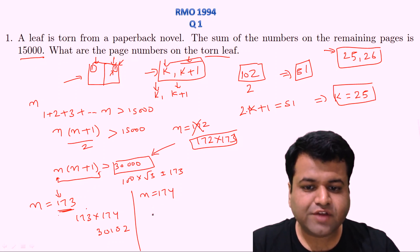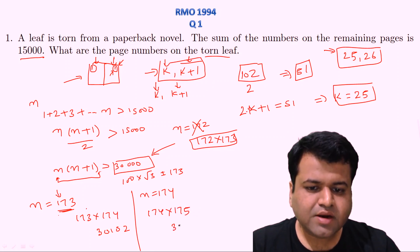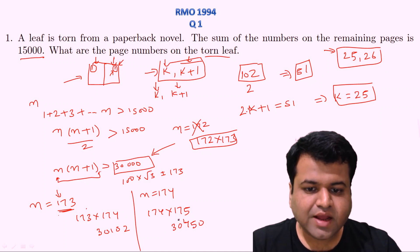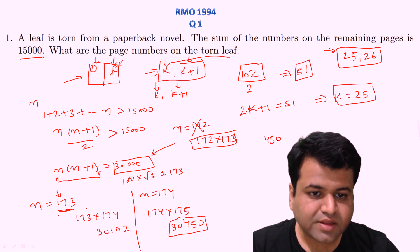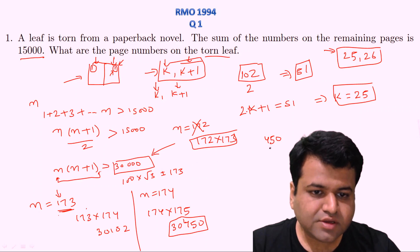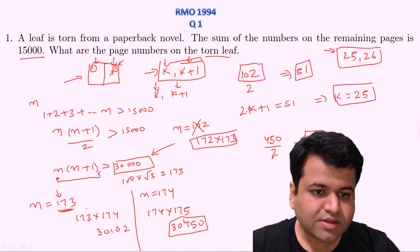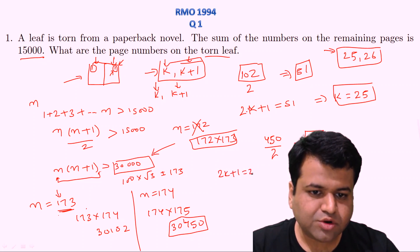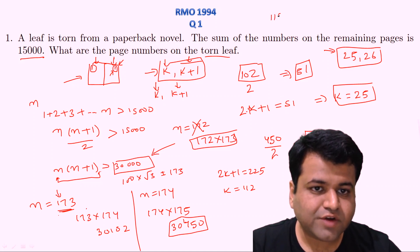If n = 174, then 174 × 175 = 30,450, which is greater than 30,000 by 450. The torn leaf should have a sum of 450/2 = 225. Setting 2K+1 = 225 gives K = 112. So the torn leaf would have page numbers 112 and 113. This is possible if page number 1 is just behind the front cover of the book.